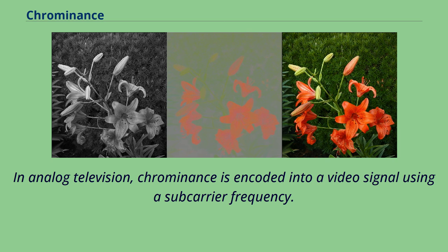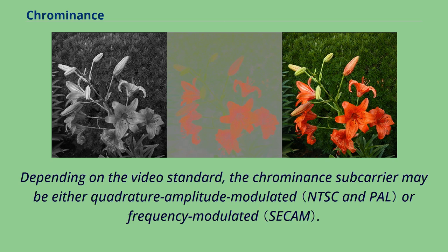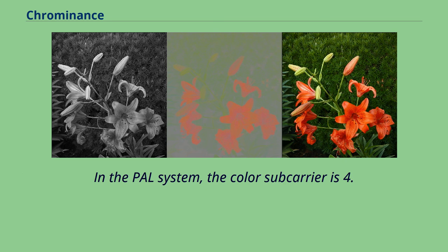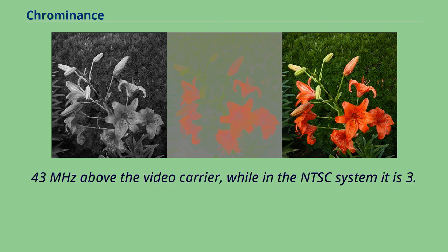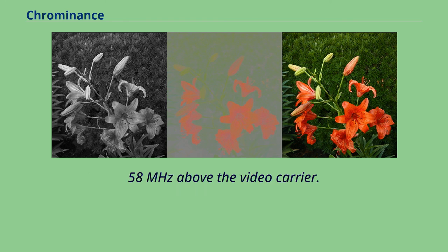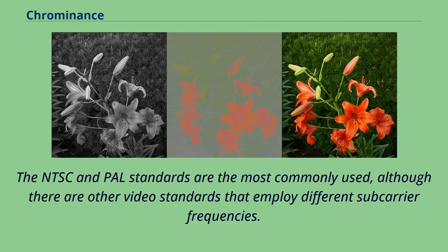In analog television, chrominance is encoded into a video signal using a subcarrier frequency. Depending on the video standard, the chrominance subcarrier may be either quadrature amplitude modulated or frequency modulated. In the PAL system, the color subcarrier is 4.43 MHz above the video carrier, while in the NTSC system it is 3.58 MHz above the video carrier. The NTSC and PAL standards are the most commonly used, although there are other video standards that employ different subcarrier frequencies.